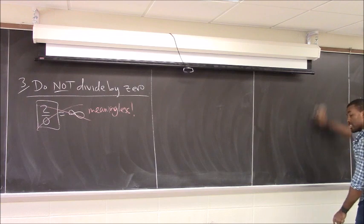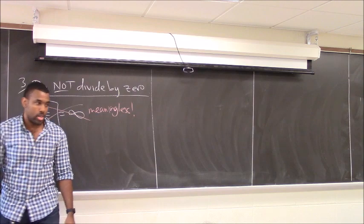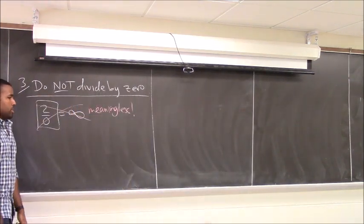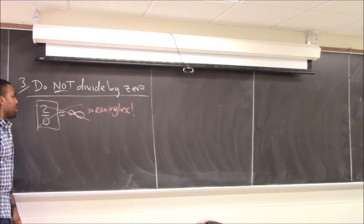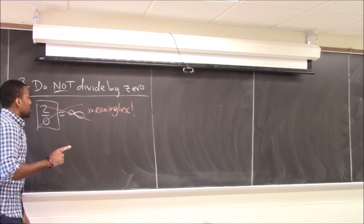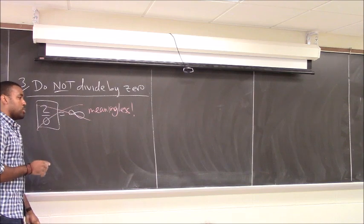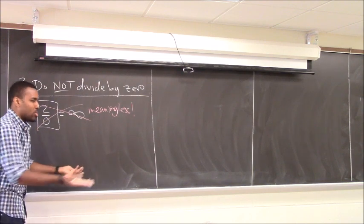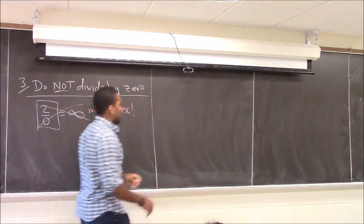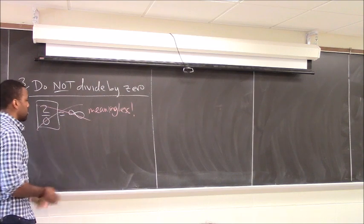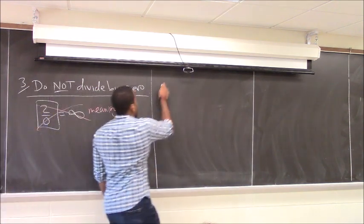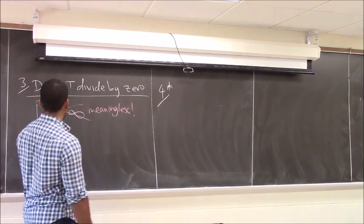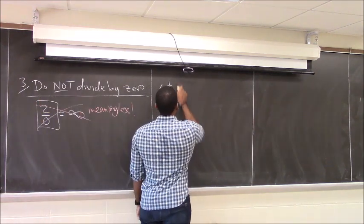Here's how serious these are: if I see you do one of these things in a problem, I will give you a zero for that entire problem — no partial credit, no matter what else you wrote correctly. These are non-negotiable. And there's a broader lesson here: a lot of times, knowing what NOT to do forces you to think of what you actually can do.